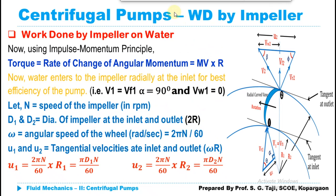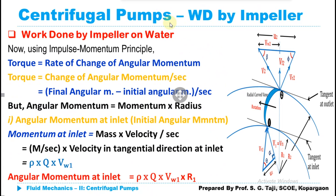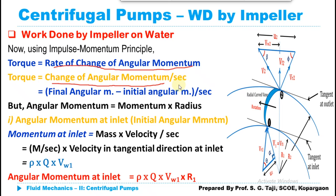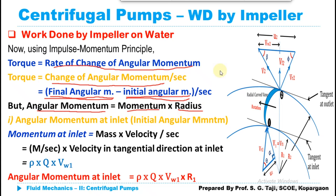Now let's compute the torque exerted by the impeller on the water, given by the rate of change of angular momentum. Since the vanes are exerting force on the water, the expression is: final angular momentum minus initial angular momentum per second. We will calculate both initial and final angular momentum, knowing that angular momentum equals momentum multiplied by radius.